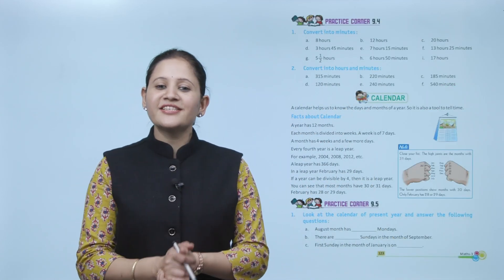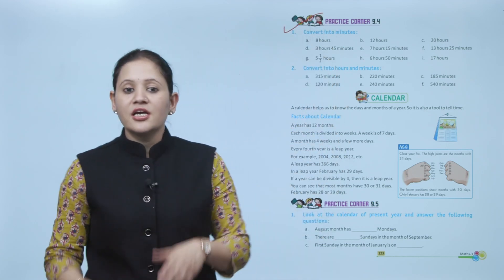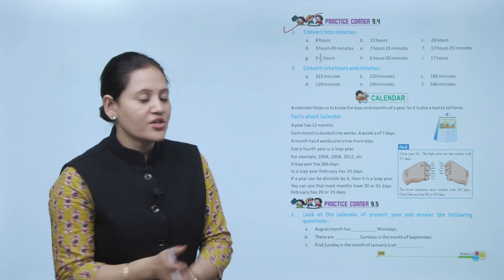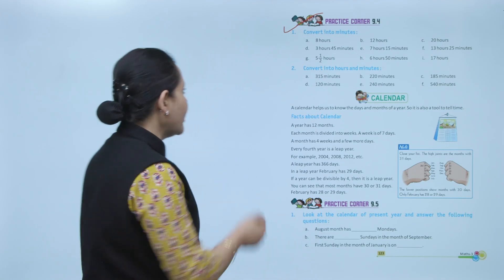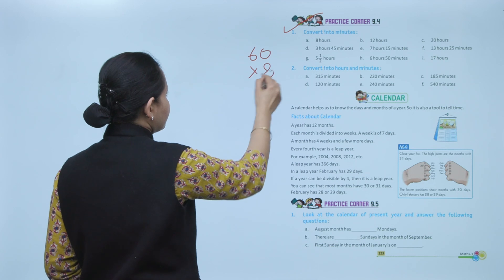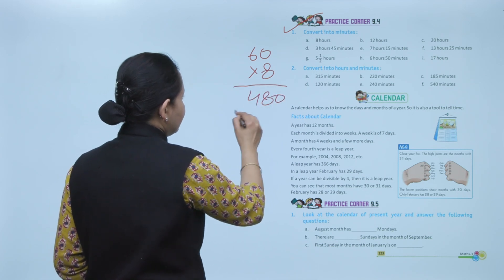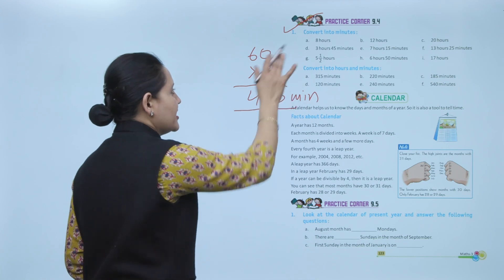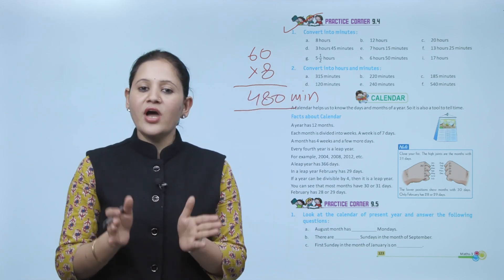Next is Practice Corner 9.4. Convert 8 hours into minutes. Since there are 60 minutes in an hour, 8 hours = 60 × 8 = 480 minutes. You have to practice all the questions of this exercise.